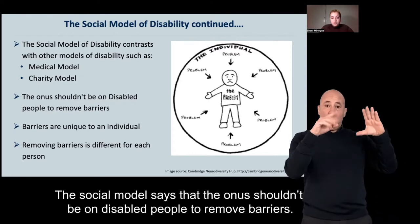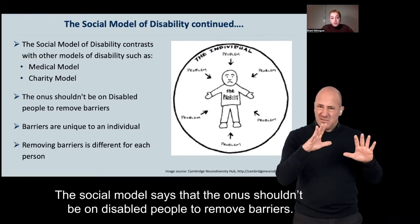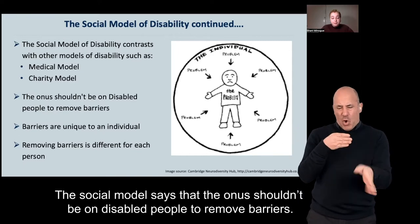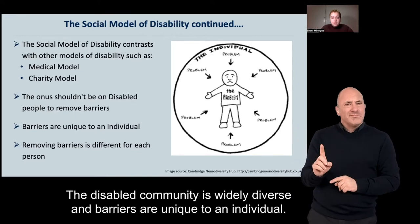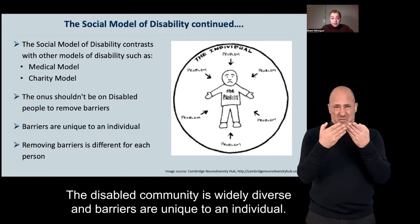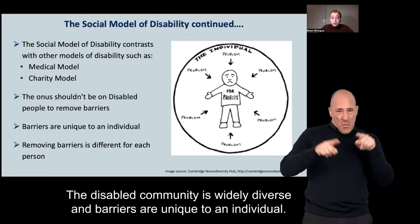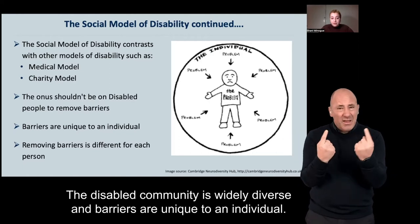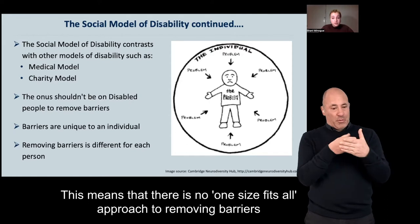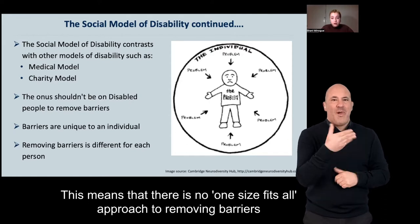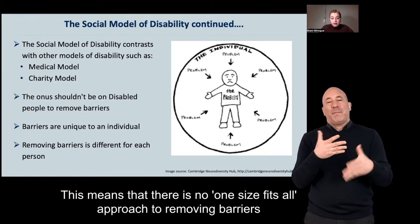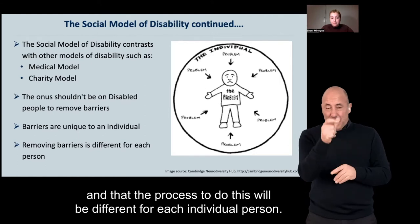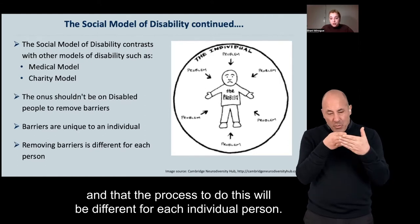The social model says that the onus shouldn't be on disabled people to remove barriers. The disabled community is widely diverse and barriers are unique to an individual, meaning there is no one-size-fits-all approach to removing barriers and that the process would be different for each individual person.